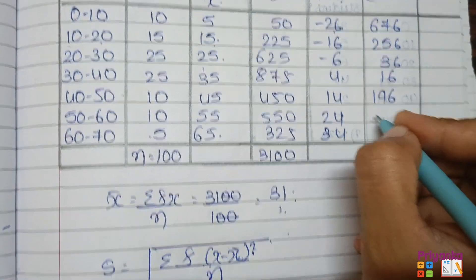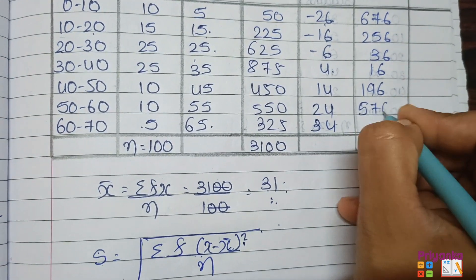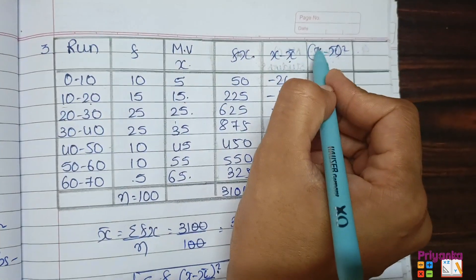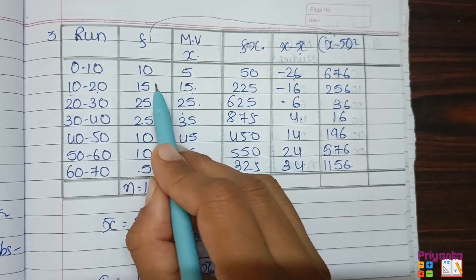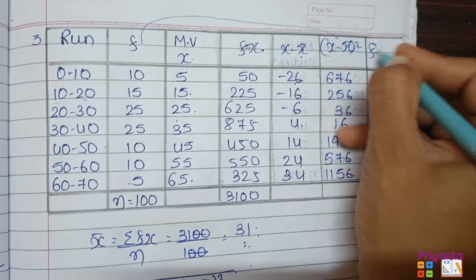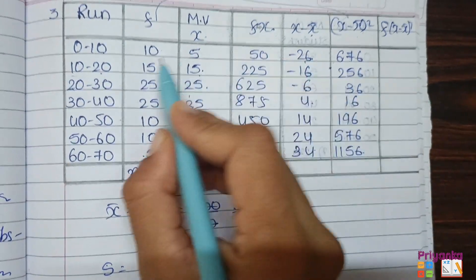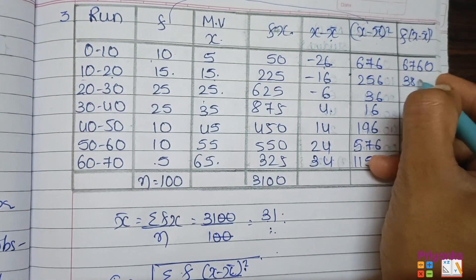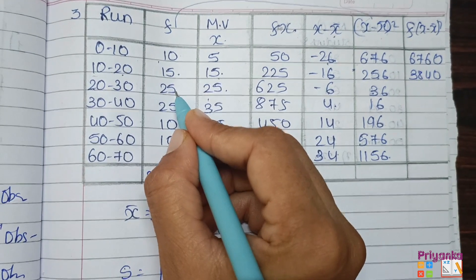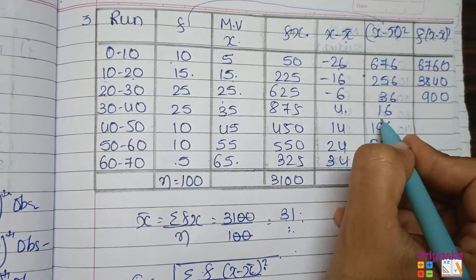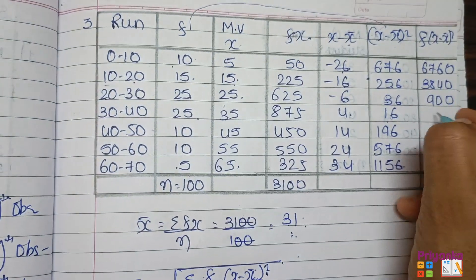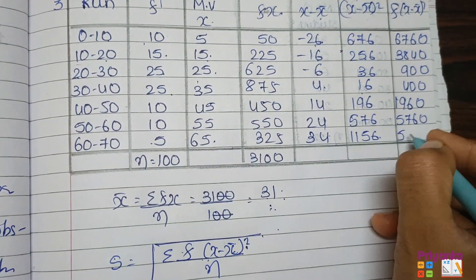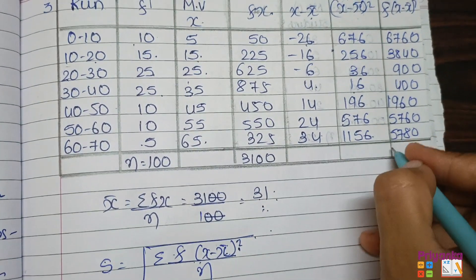The (x - x̄)² values are: 26² = 676, 16² = 256, 6² = 36, 4² = 16, 14² = 196, 24² = 576, 34² = 1156. Now multiply each by frequency: 676 × 10 = 6760, 256 × 15 = 3840, 36 × 25 = 900, 16 × 25 = 400. Continue for the remaining values.